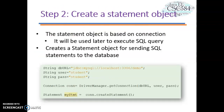Step two: create a Statement object. The createStatement() method of a Connection interface is used to create the statement. The statement object is responsible for executing queries with the database. In the example, the connection object is used to create the statement object myStatement from the Statement class.